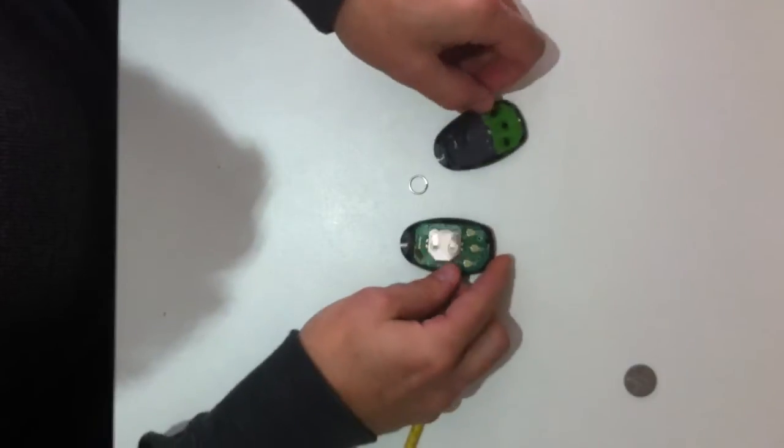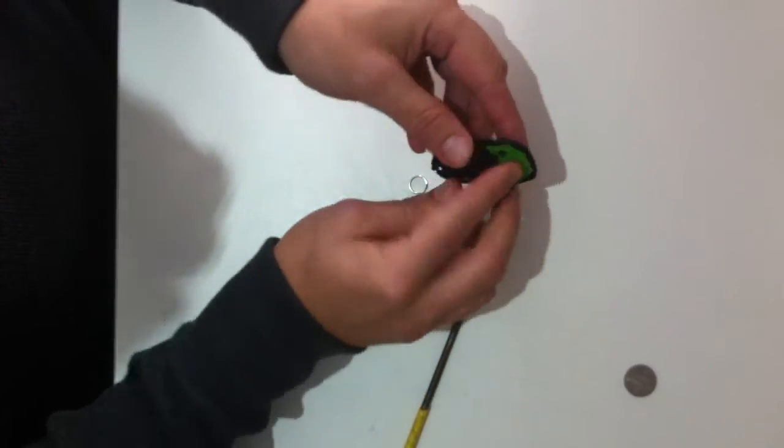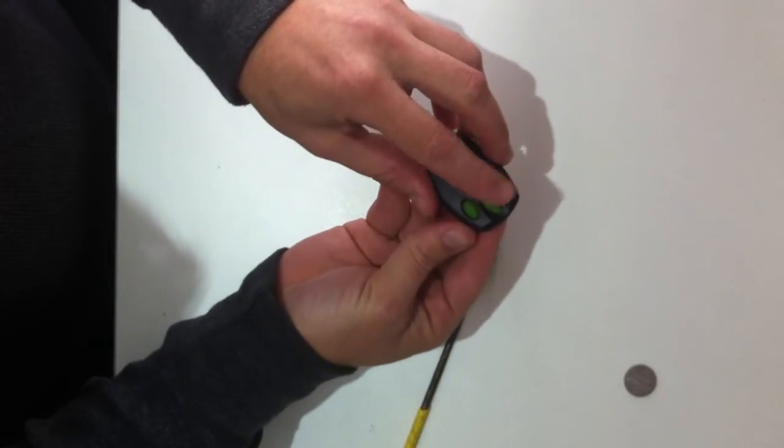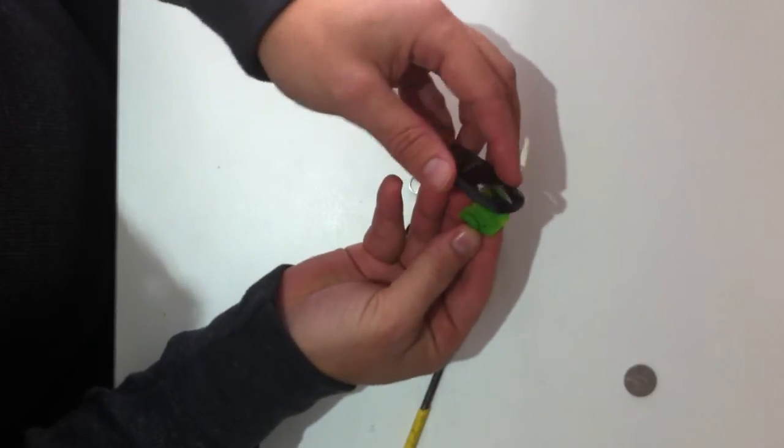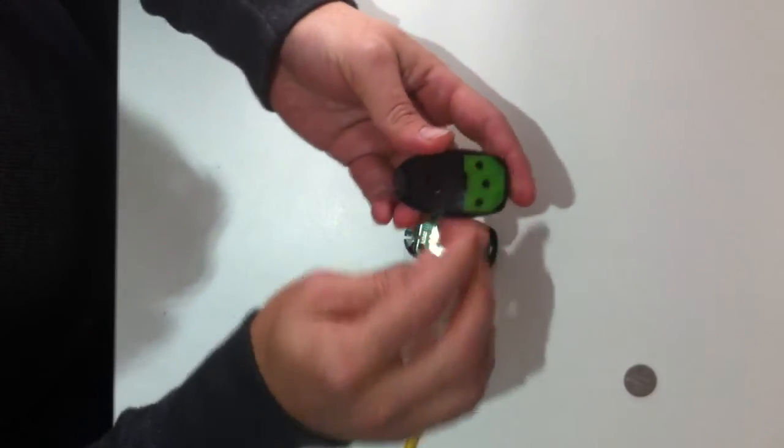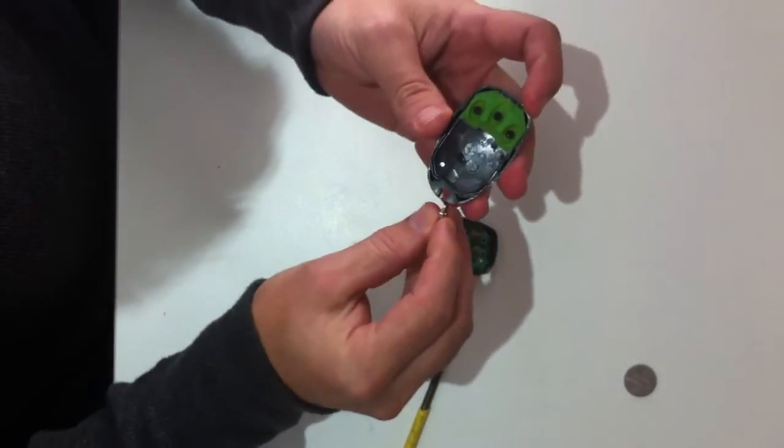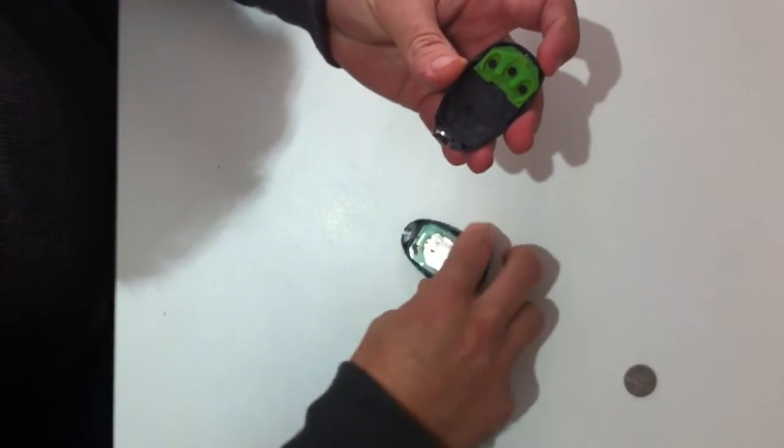Now to put the remote back together, I find sometimes if you tip this front section up, the little rubber buttons will fall out. So I generally keep that upside down. Put your little keychain holder on if you've got one.